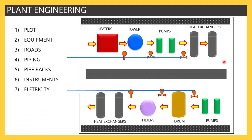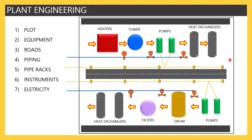Next is electricity. A plant has to be operated day and night, so it needs lights. Additionally, certain equipment such as pumps are operated through electric power, so we must supply electricity to them via electrical cables. These cables can be underground or above ground, coming from substations or the origin point. This must be considered while planning the process plant engineering.